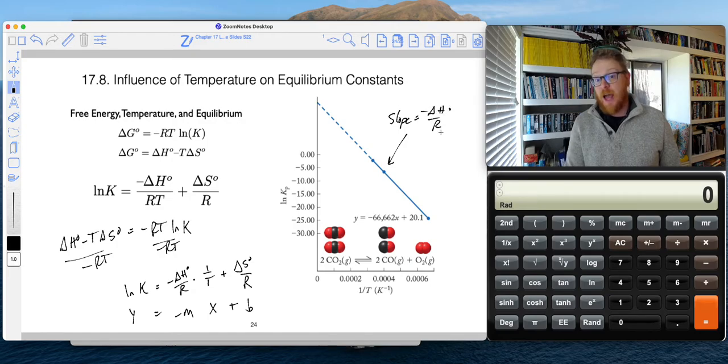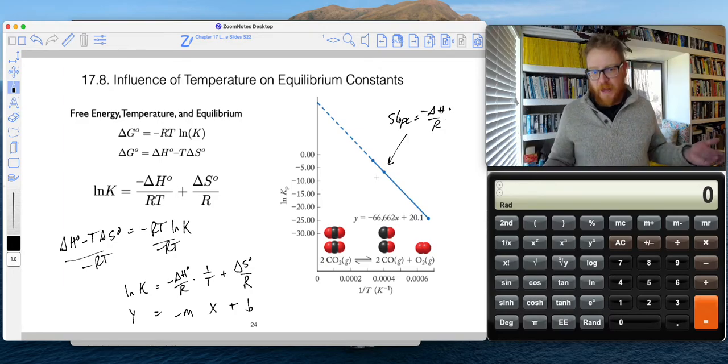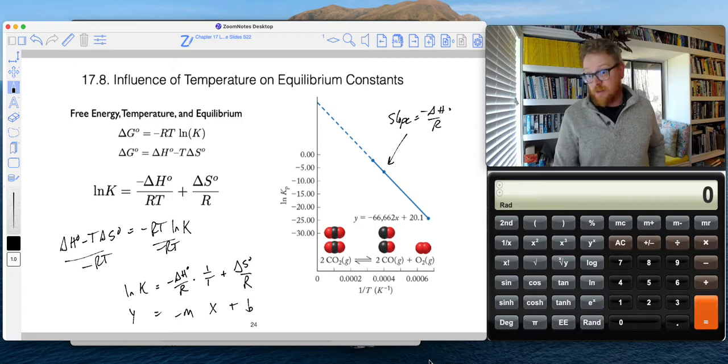And I could multiply the slope by negative R, and that would give me the delta H of a reaction, which is pretty cool. That's one way enthalpies are determined.